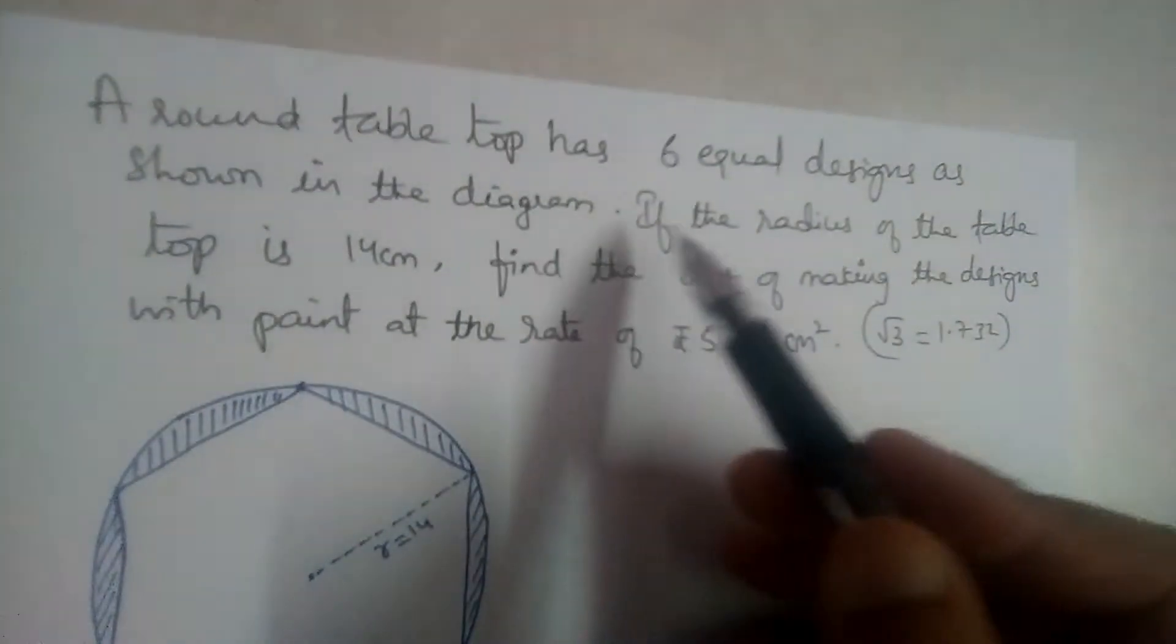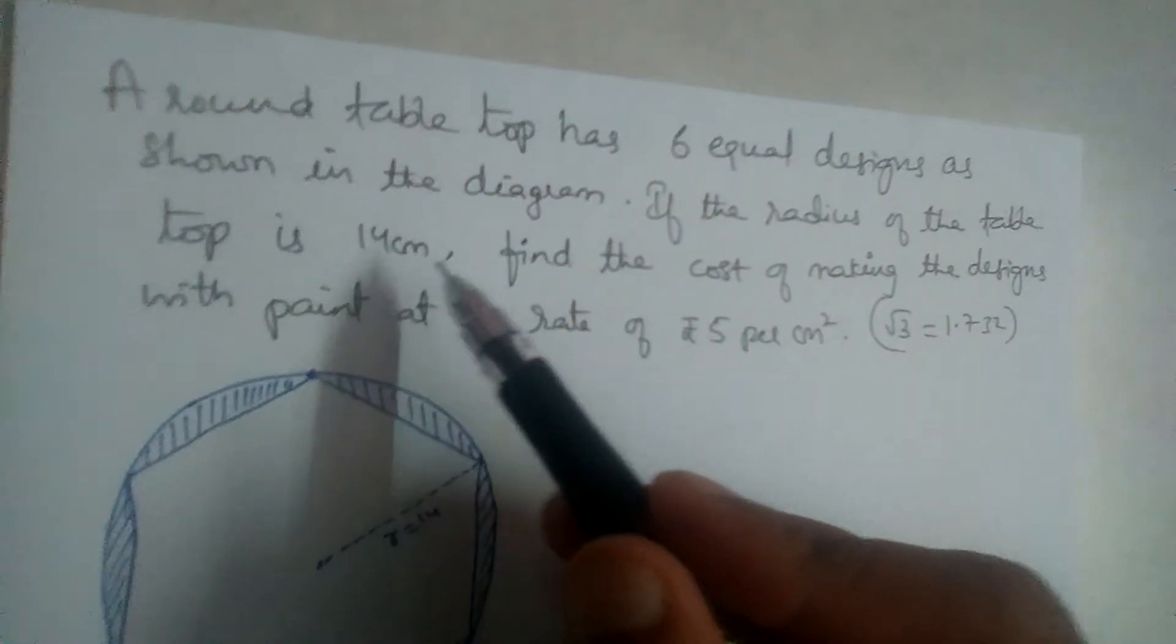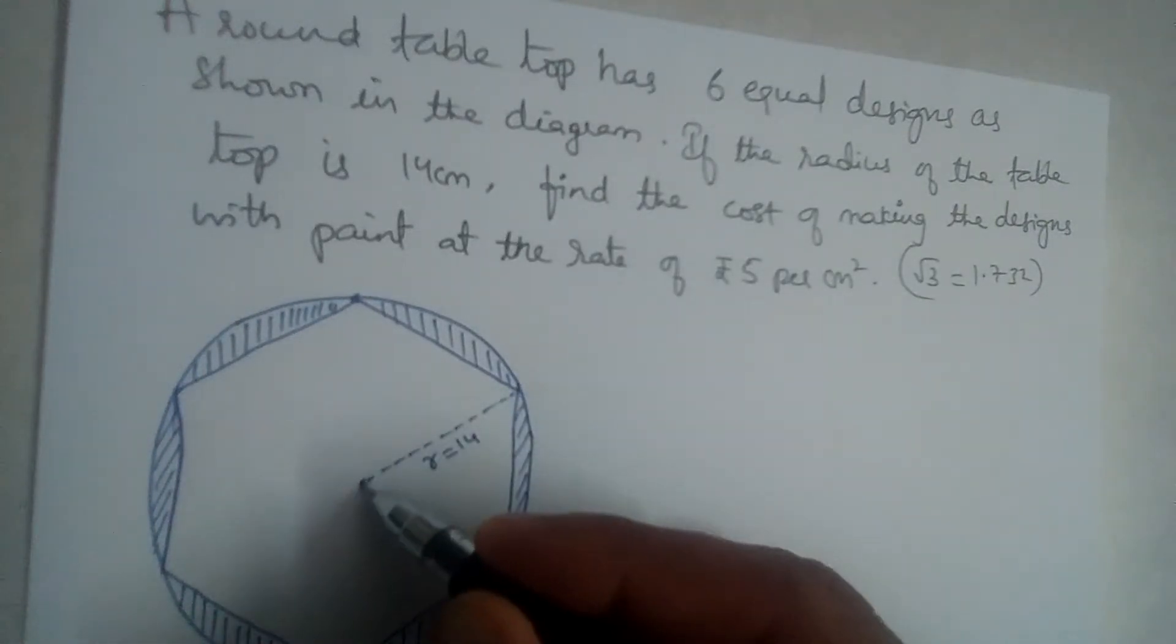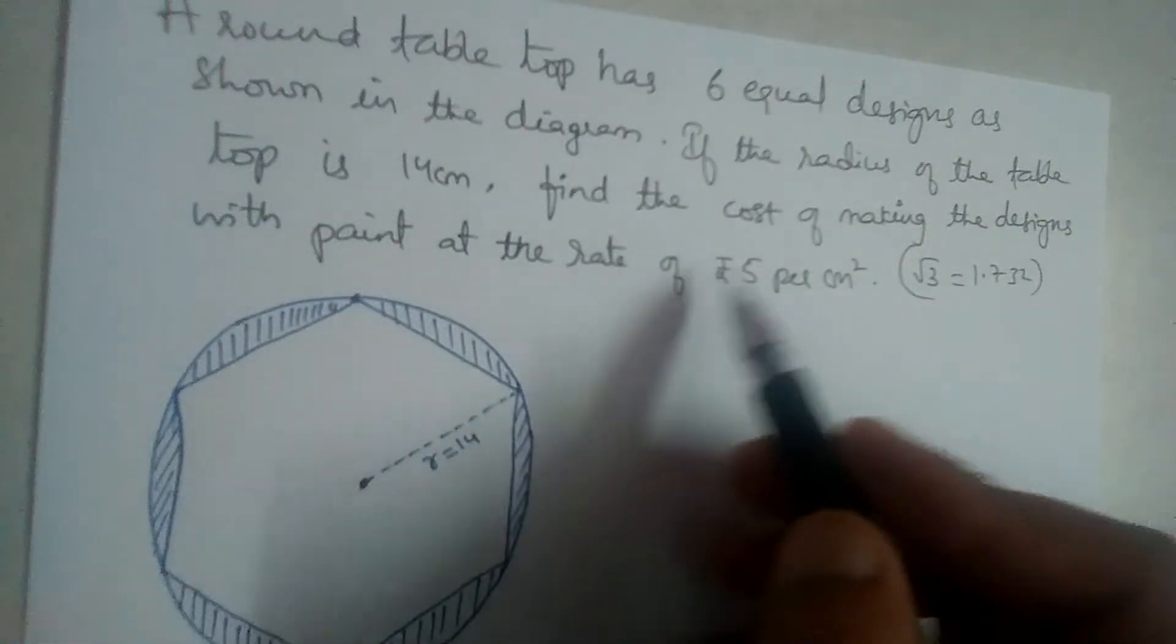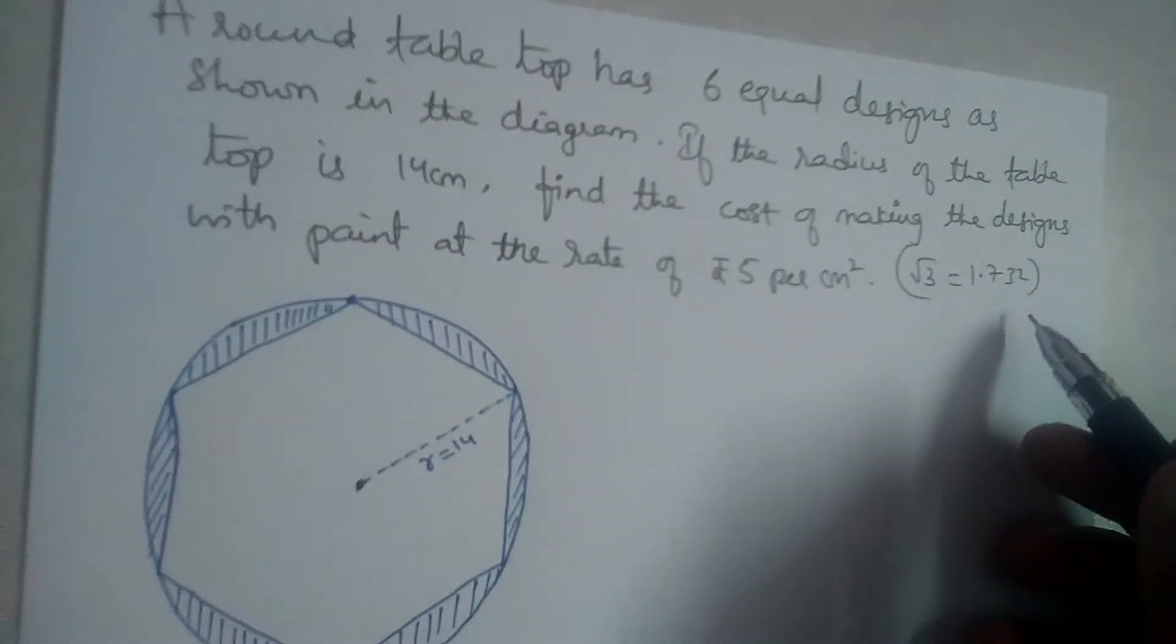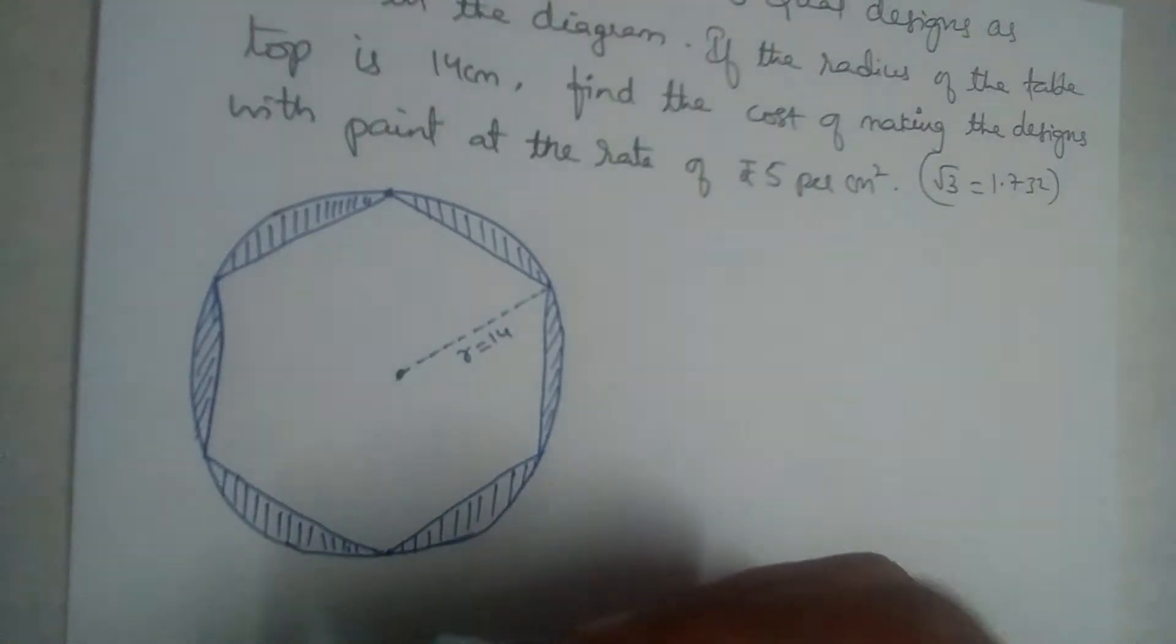Six equal designs as shown in the diagram. If the radius of the table top is 14 centimeters, find the cost of making the designs with paint at the rate of 5 rupees per centimeter square. Take root 3 as 1.732.